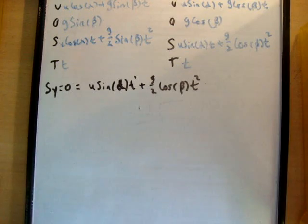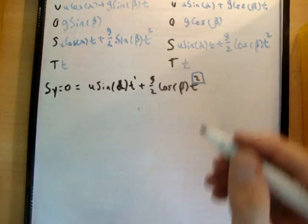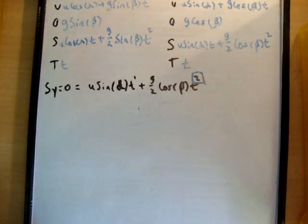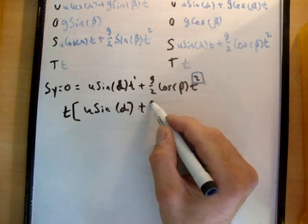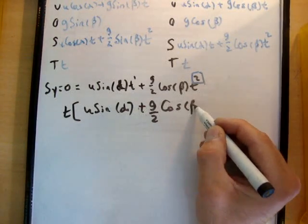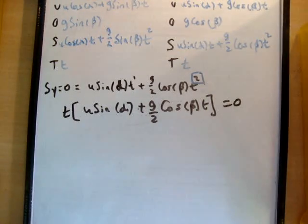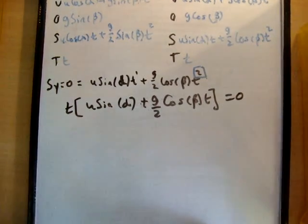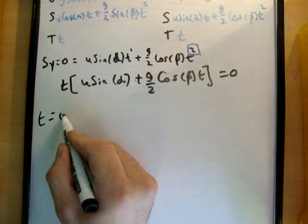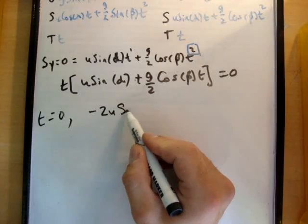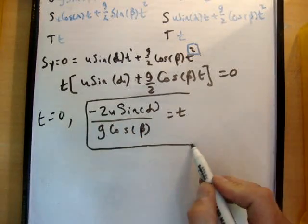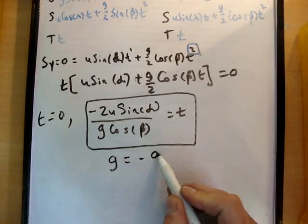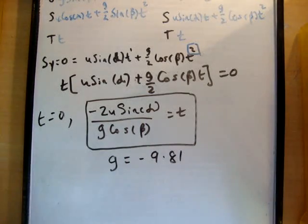By the way, a quadratic is a polynomial of degree 2 where a polynomial has powers and its highest power is 2 for a quadratic. So let's just quickly solve this. We pull out t and we get u times the sine of alpha plus g over 2 times the cosine of beta times t equals 0. Where two things are multiplied together to get 0, one of them is 0. So we get t in this case equals 0 and negative 2u sine alpha over g times the cosine of beta equals t. And this, of course, as normal is a positive number because I define g as a negative number.